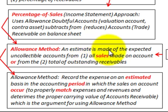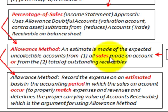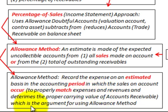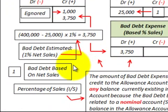Using the allowance method, an estimate is made of the expected uncollectible accounts from either all sales made on account or from the total outstanding receivables. You record the expense on an estimated basis in the accounting period in which the sales on account occur — to properly match expenses and revenues and determine the proper carrying value of accounts receivable.